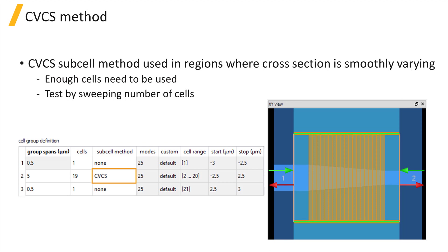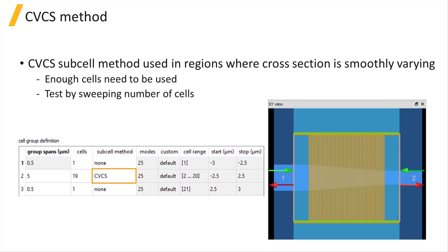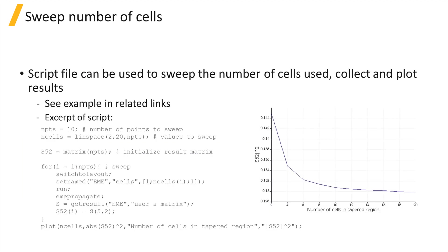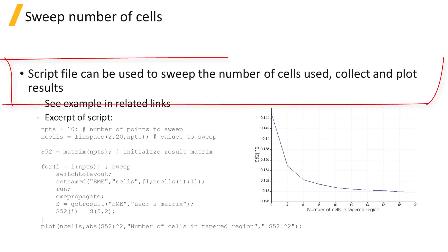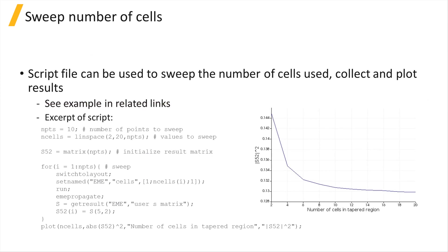To test whether enough cells are being used, convergence testing by increasing the number of cells used in each cell group region where the cross-section of the structure is continuously varying can be performed. A script file can be used to sweep the number of cells in a given cell group region and collect the S matrix or S parameter result of interest.